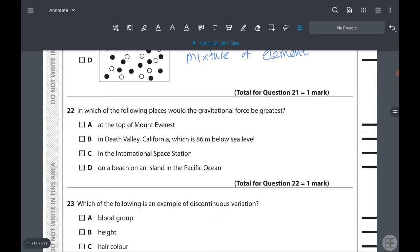Moving to next, 22. In which of the following places would the gravitational force be greatest? Gravitational force is greater closer towards the earth. They have given different places. The top of Mount Everest, it will be less. So the Death Valley, answer is B.